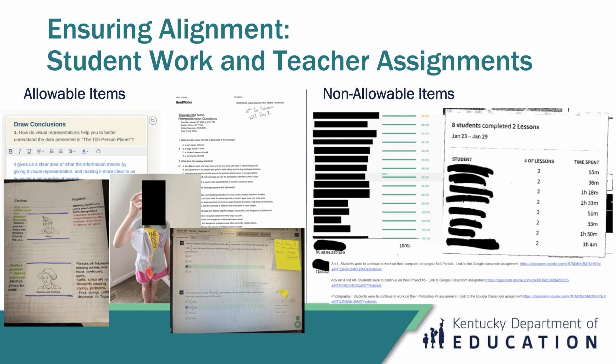For examples of allowable items: screenshots from websites, pictures students have taken of completed projects, screen captures, scanned copies, and cell phone pictures of actual notebooks are all allowable — as they showcase student work. Note that student faces must be redacted, as shown in the example. Non-allowable items such as completion sheets and grade book pages, once everything has been redacted, show very little information and cannot be linked to the teacher assignment.